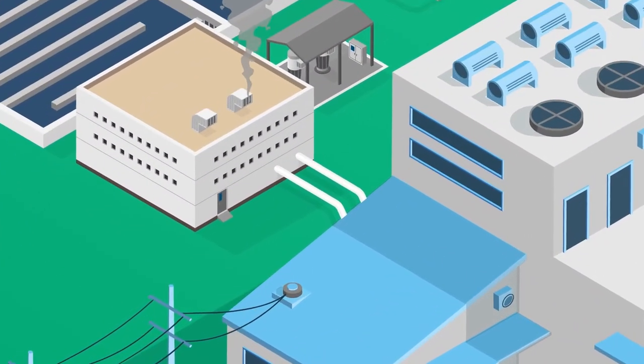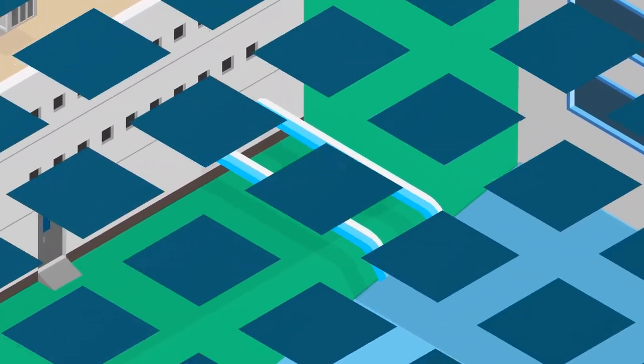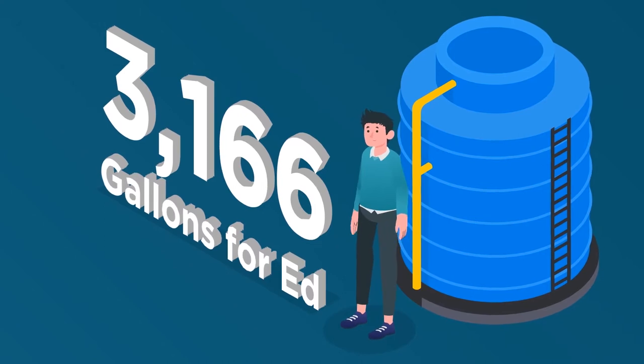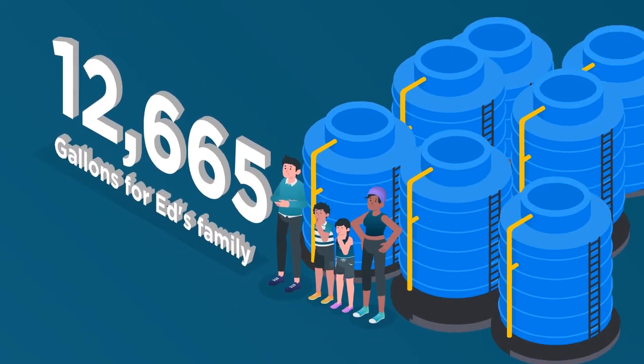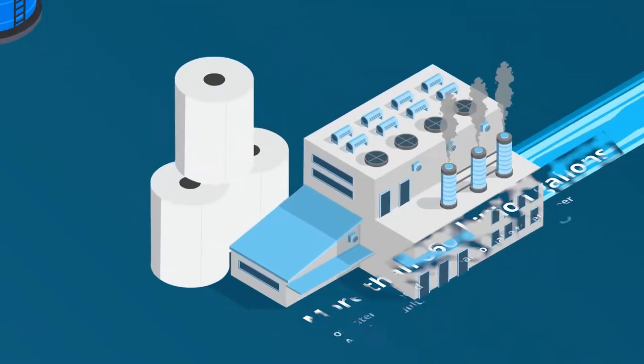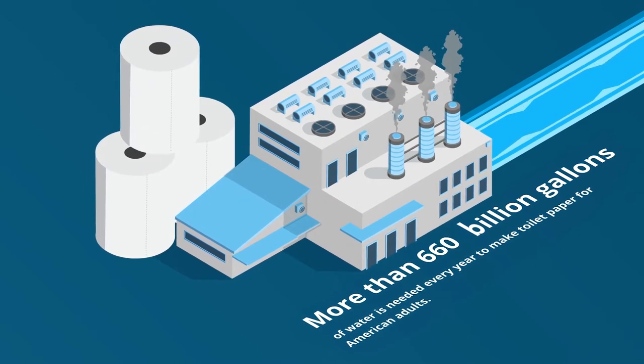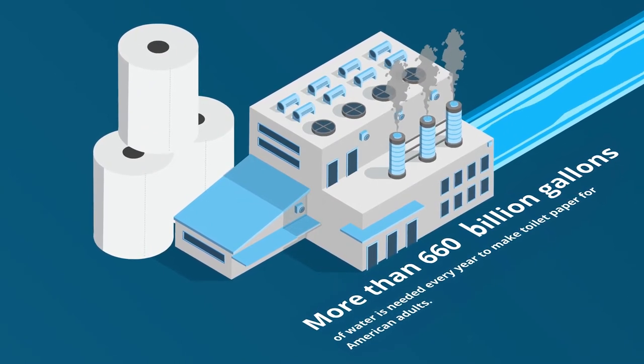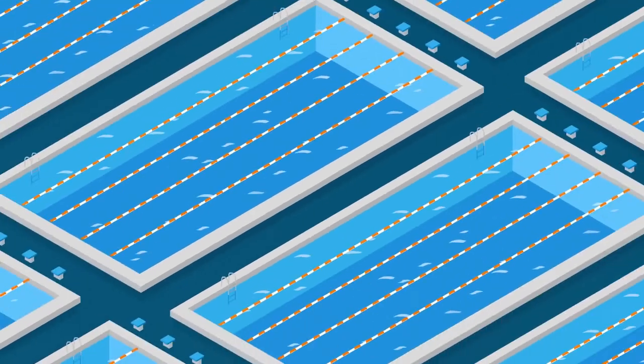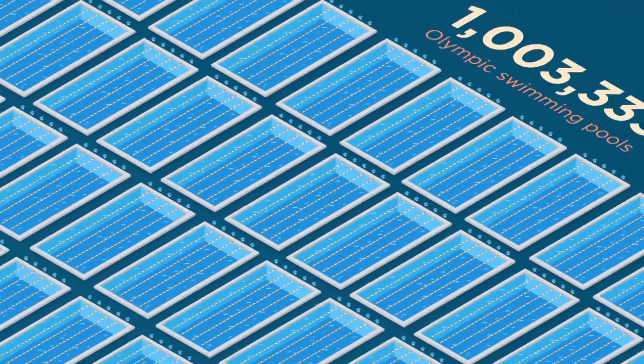Producing Ed's toilet paper also takes a lot of water. Over 3,000 gallons of water a year for him and nearly 13,000 gallons for his family. More than 660 billion gallons of water is needed every year to make toilet paper for American adults. That's the equivalent of one million Olympic swimming pools.